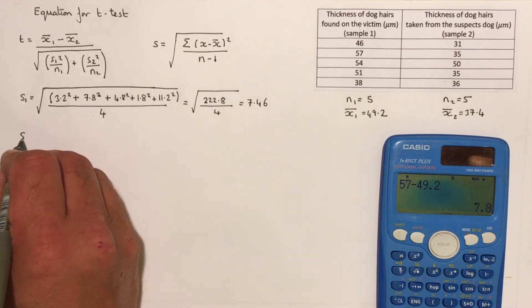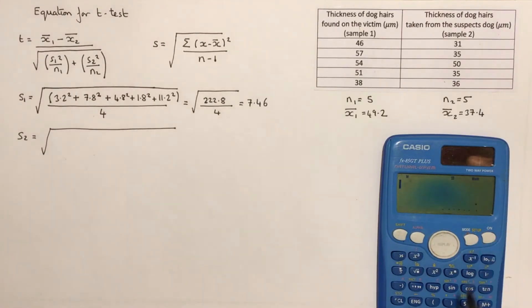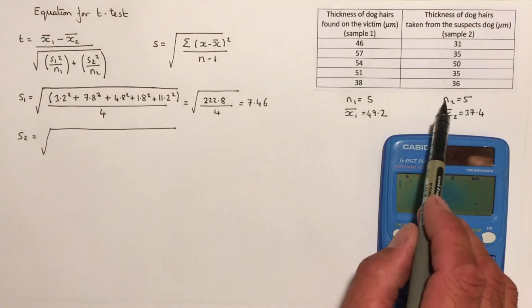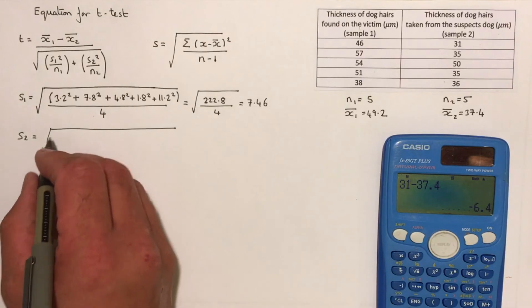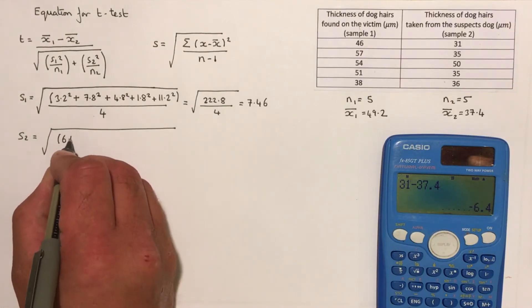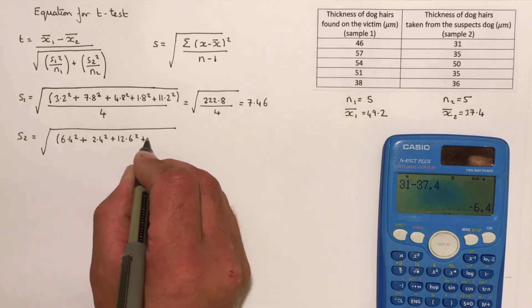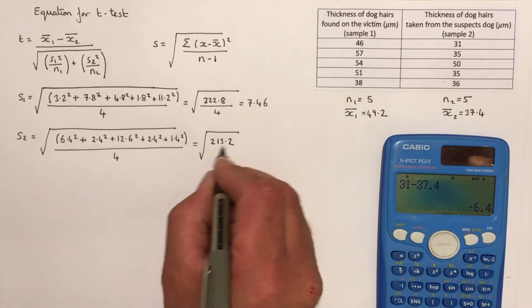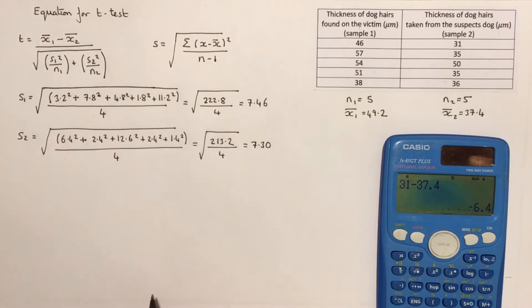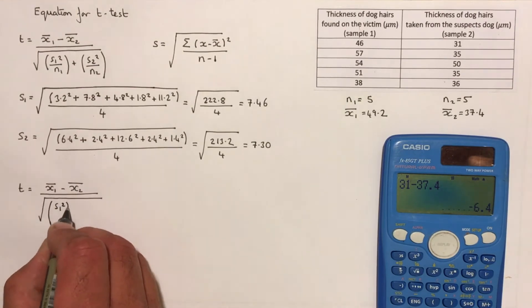Now I work out the standard deviation for sample two using exactly the same method. The first data point in sample two is 31, so 31 minus the mean of 37.4 gives 6.4, which is then squared. Completing that for all remaining data in sample two gives a standard deviation of 7.30. With all this information, I can now calculate the t value.